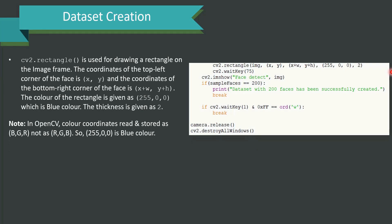cv2.rectangle is used for drawing a rectangle on the image frame. The coordinates of the top left corner of the face is x comma y and the coordinates of the bottom right corner of the face is x plus w comma y plus h. The color of the rectangle is given as 255, 0, 0 which is blue color. The thickness is quoted as 2 and you can choose any color, you can choose thickness of your choice. One should always note that in OpenCV the color coordinates are always read as BGR and not as RGB. So 255, 0, 0 is blue color. While writing the code, this will be impactful.